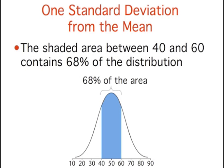The shaded area between 40 and 60 contains 68% of the distribution. The area within one standard deviation of the mean is 0.68.